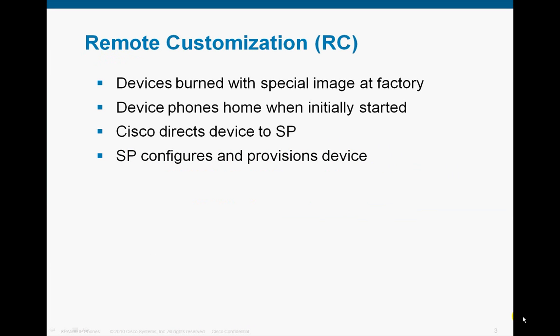An overview of the RC process: a normal device is simply burned with a special image at the factory. When the device is first powered up, it contacts Cisco for a pointer to its final provisioning server. Once the device accesses its provisioning server, the provisioning server sends it its final configuration.